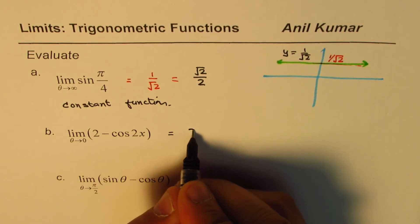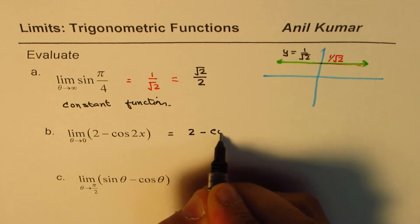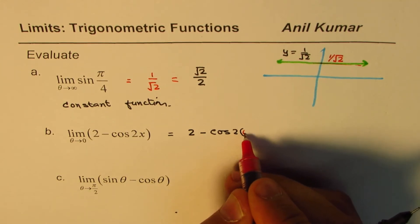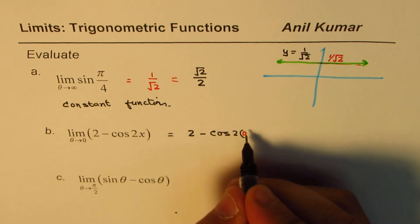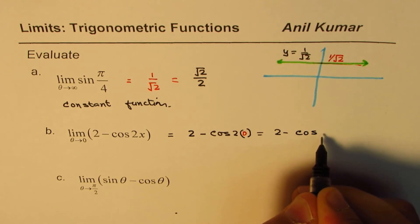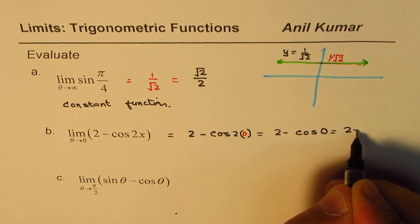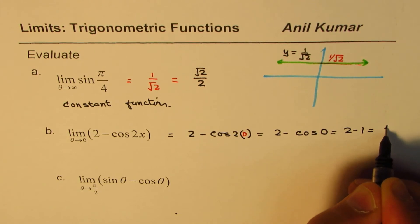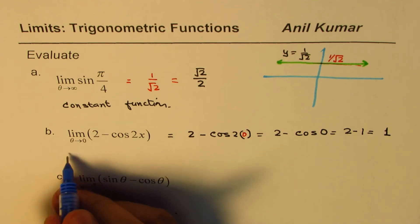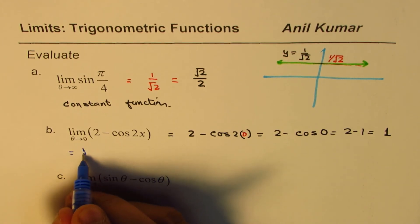So let's figure it out. So it is 2 minus cos of 2 times, we'll substitute 0 here, 2 times 0. So which is equals to 2 minus cos 0 and we know cos 0 is 1. So it is 2 minus 1 and so the limit is 1. So we have this answer, the limit of this function is equal to 1.